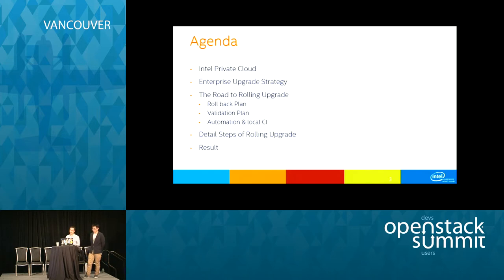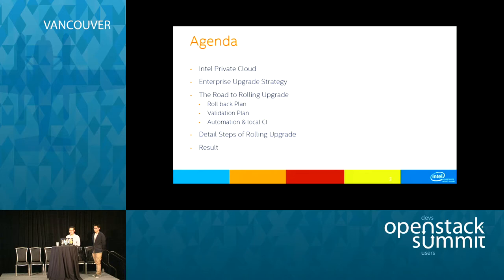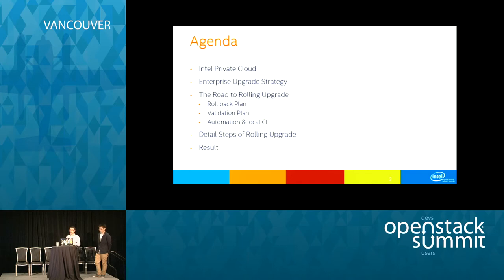So today, first of all, I will introduce Intel Private Cloud — what it is, what kind of services we provide, and what modules we use in OpenStack. Then I will talk about the strategy and considerations behind this upgrade, and walk you through the rolling upgrade road, which contains the rollback plan, validation plan, and some automation tools. And last, I will show you the results of our upgrade and our feedback to the community.